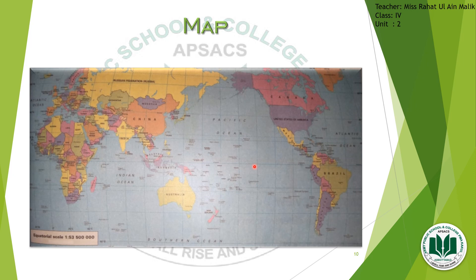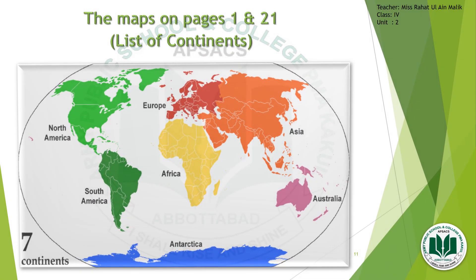The map on page 21 has already been discussed. If you turn to page 1 of your textbook, under the unit 'The Earth and the Environment,' you will see the continents and oceans: Indian Ocean, Pacific Ocean, Arctic Ocean, Antarctica, Atlantic Ocean, Europe, Asia, Africa, South America, and North America. This map shows only continents and oceans, while the previous map showed the entire world including countries.